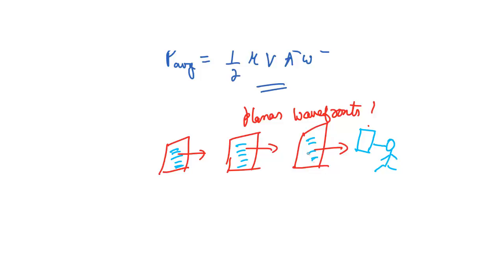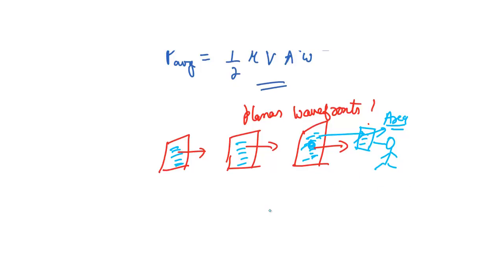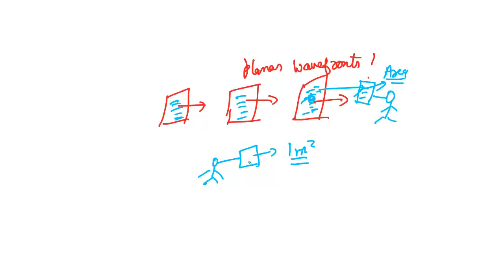If you hold a sheet in the path of sound waves, the power intercepted depends on the area of the sheet. So we define intensity as the power received per unit area. If you hold a 1 m² sheet, the power you receive equals the intensity. Intensity = Power / Area.